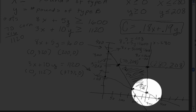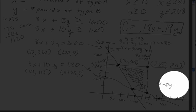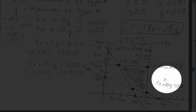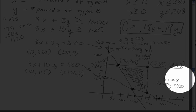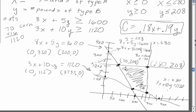Now this point down here is going to be similar, except you're going to have two different equations. You're going to have 3x plus 10y equals 1120, and the other line that intersects is x equals 280. So you're going to substitute 280 in here for x and solve for y, and that's going to end up giving you 28.